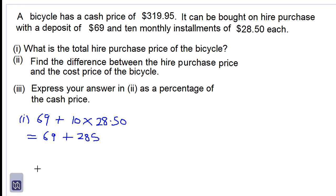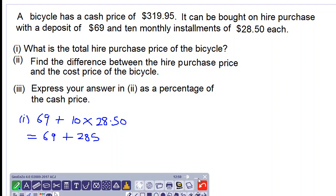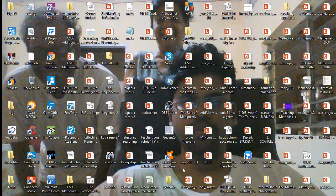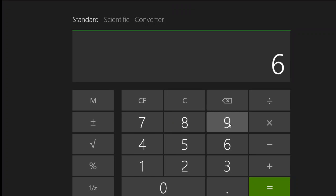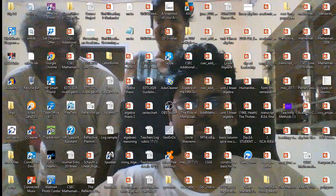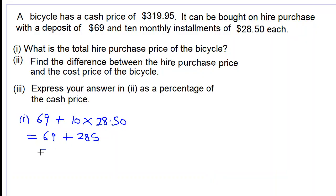Remember, we have to multiply first by BODMAS. So let's add this on our calculator. $69 plus $285 equals $354. So the hire purchase price of the bicycle is $354.